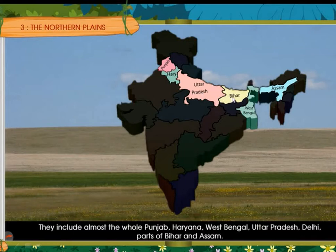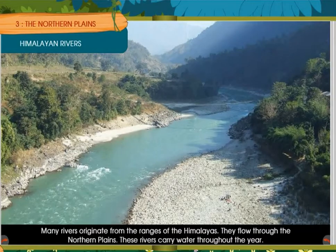The soil in the northern plains is very fertile. The important cities in the northern plains are Amritsar, Delhi, Agra, Kanpur, Allahabad, Lucknow, Varanasi, Patna, Kolkata and Guwahati.